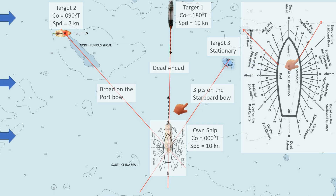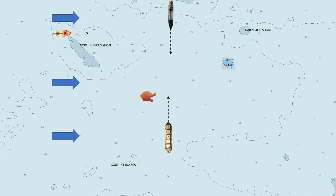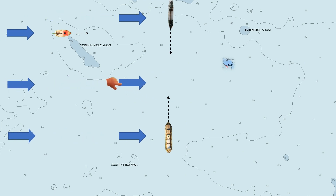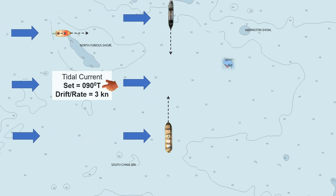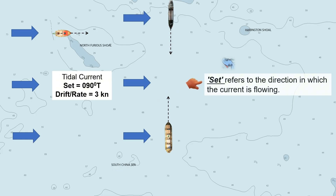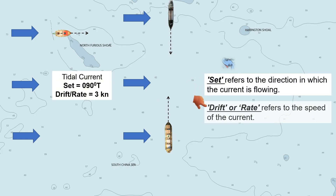Let's assume there is a strong current flowing from the west going east. So the set is 090 degrees true, with a drift or rate of 3 knots. The term 'set' refers to the direction in which the current is flowing, while 'drift' or 'rate' refers to the speed of the current.